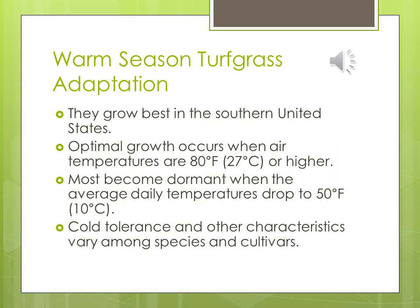Cold tolerance and other characteristics vary among species and cultivars. Different warm season grasses have different cold tolerances — Bermuda grass tolerates cold a bit more than St. Augustine grass. In Wilmington you'll see St. Augustine, which is a very good grass for lawns, but you won't see it here. You will see Bermuda in both locations.